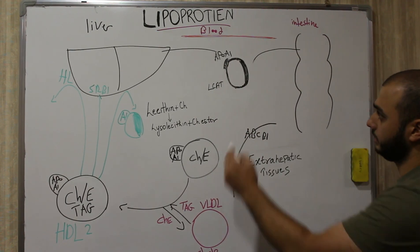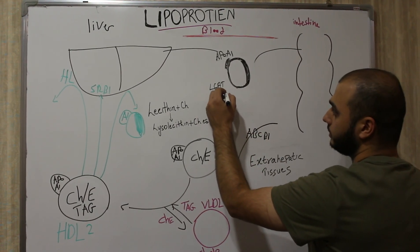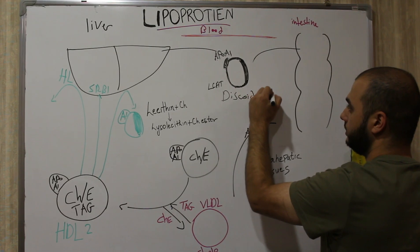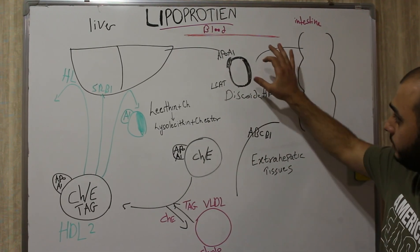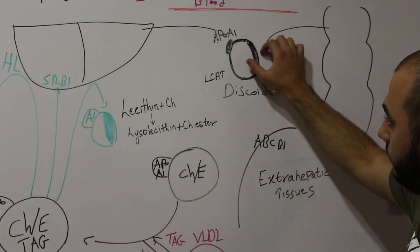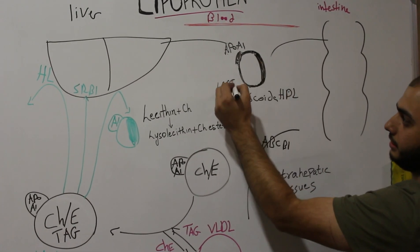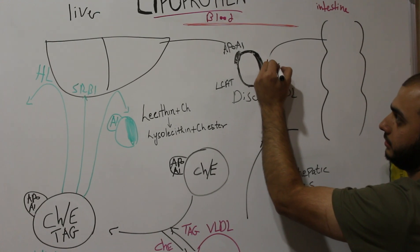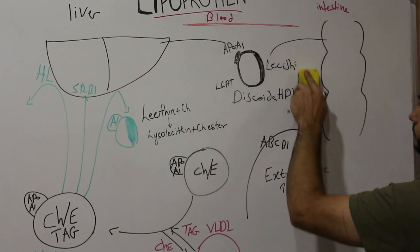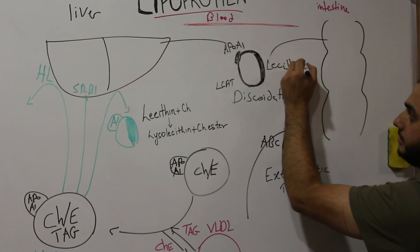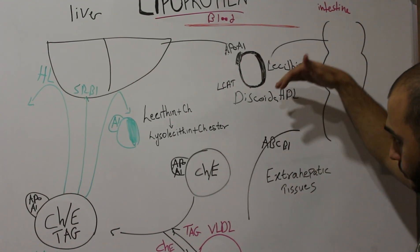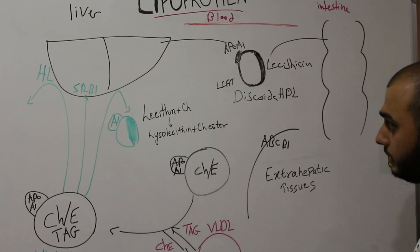After secretion and entering the blood, HDL will have a discoidal shape, so we call it discoidal HDL. It will have a thick cortex and apoprotein A1. The main component of this thick cortex is lecithin — this is very important. The main phospholipid is lecithin in this thick cortex.